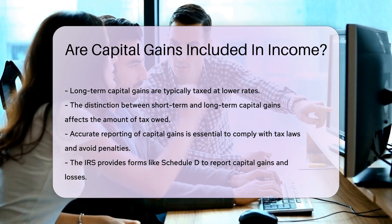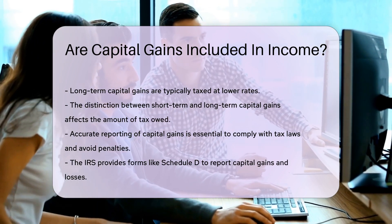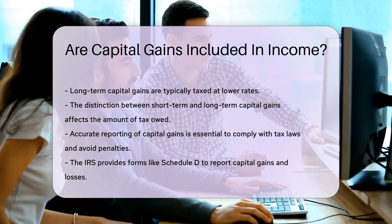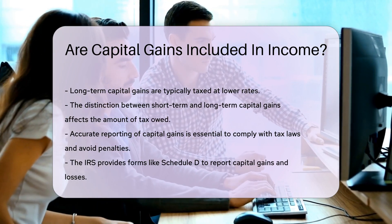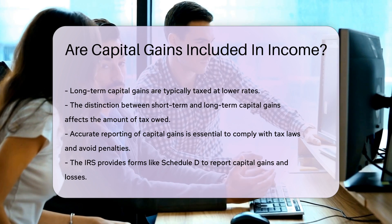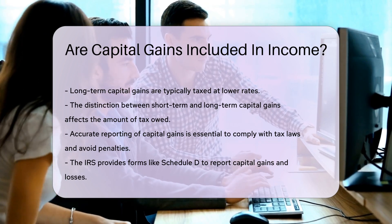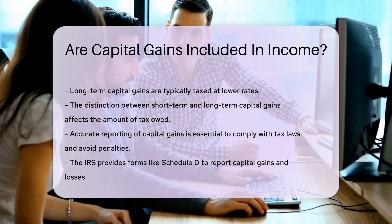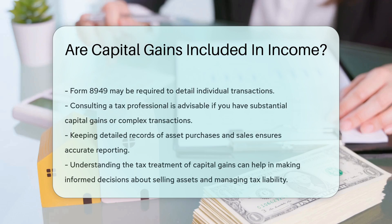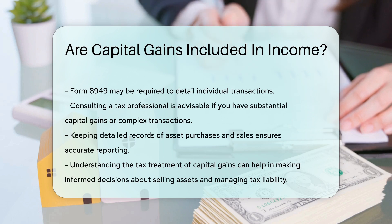Reporting capital gains accurately is essential to comply with tax laws and avoid penalties. The IRS provides forms like Schedule D to help you report capital gains and losses. You may also need to use Form 8,949 to detail individual transactions.